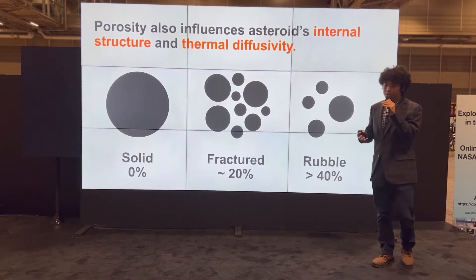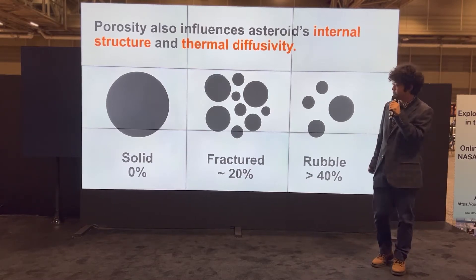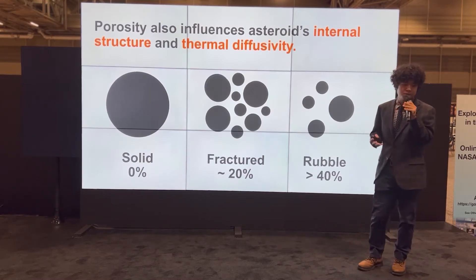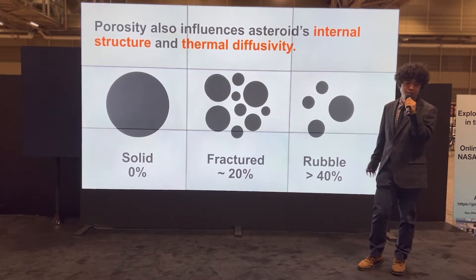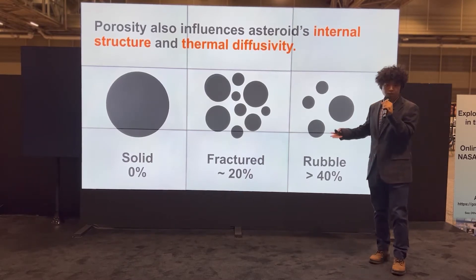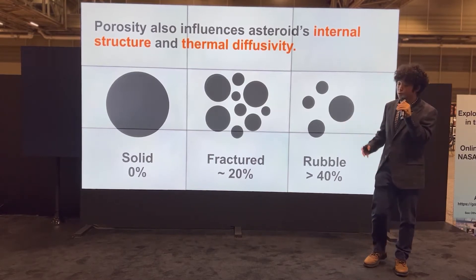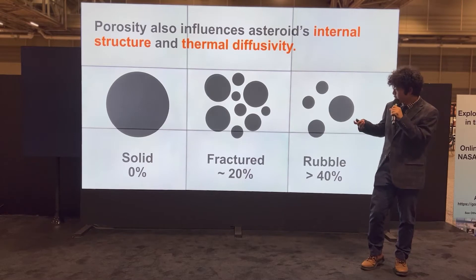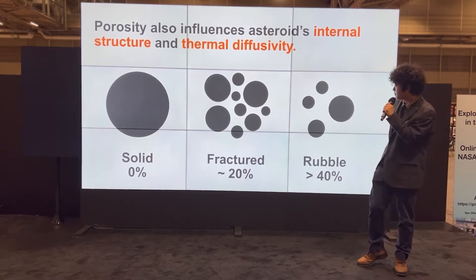Porosity is a significant factor in determining if an asteroid will make it through the atmosphere. In small solar system objects, asteroids have 10 to 60 percent porosity, and depending on the porosity, the physics of its interaction with air changes. The higher the porosity, the higher the chance it will not make it to the ground.